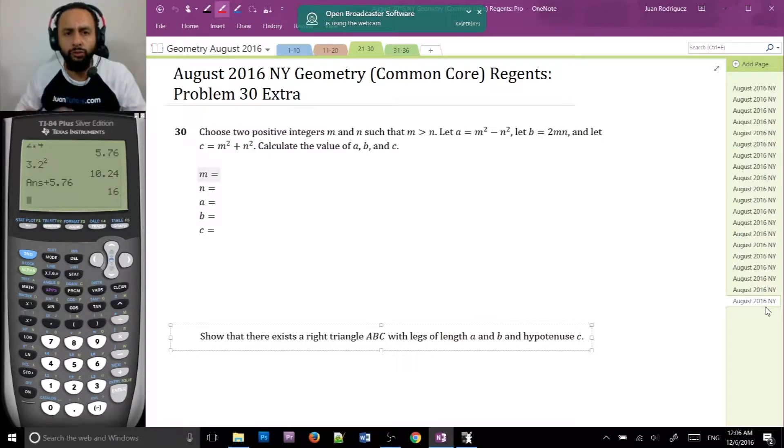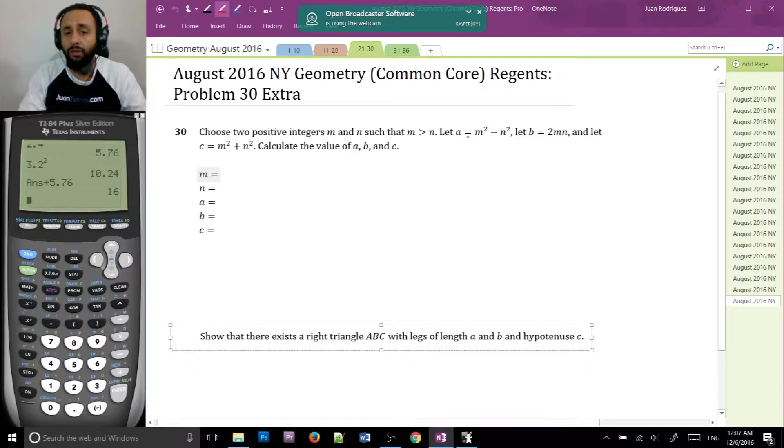We want to choose two positive integers. Now this is a little bit of a crazy problem. If we want to choose two positive integers, M and N, such that M is greater than N, then let A equals M squared minus N squared and B equals 2MN and let C equals M squared plus N squared and calculate the value of A, B, and C. And then show that there exists a right triangle with legs of length A and B and hypotenuse C. That is a crazy problem. Well, let's just obey, though. Choose two positive integers, M and N, such that M is greater than N.